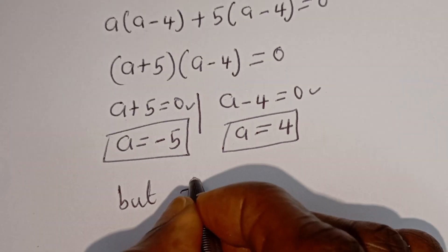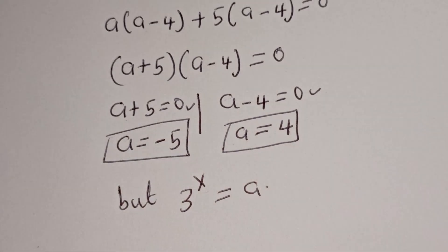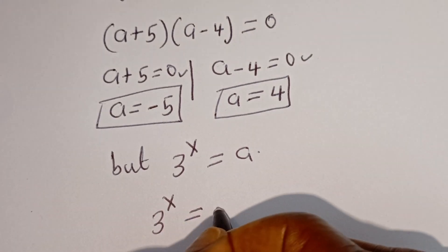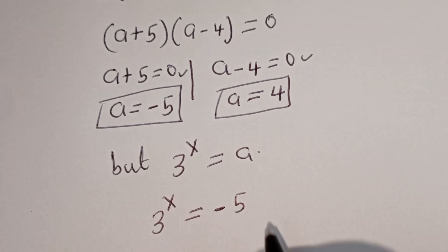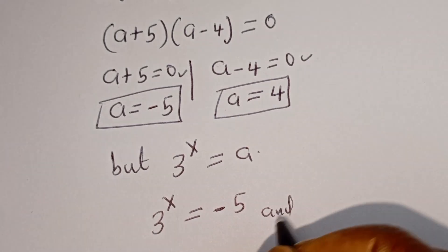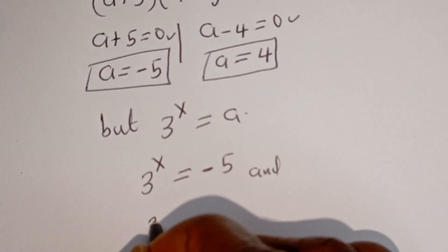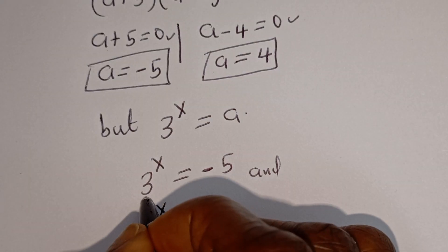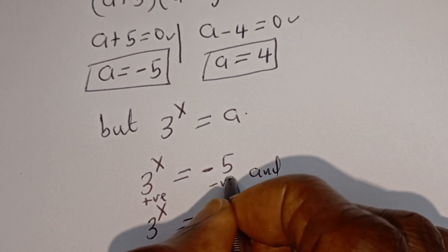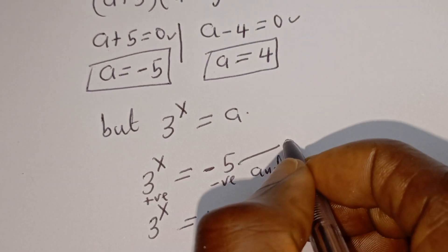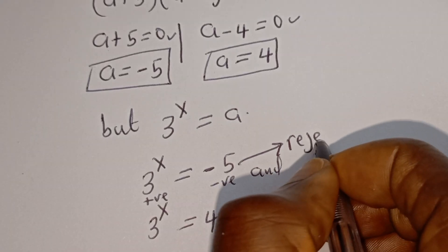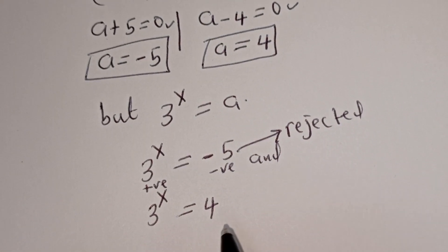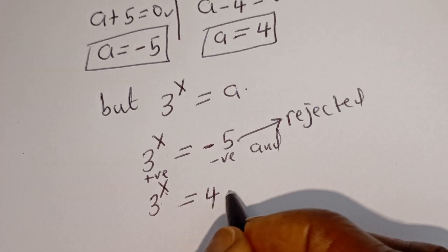Recalling that 3 to the power of x equals a: the first case gives 3 to the power of x equals minus 5, and the second gives 3 to the power of x equals 4. Since 3 to the power of x is always positive, the negative solution is rejected. The only valid solution is 3 to the power of x equals 4.